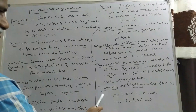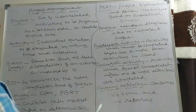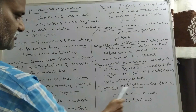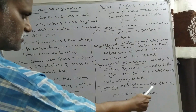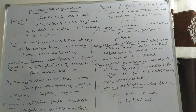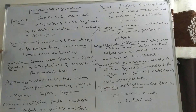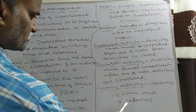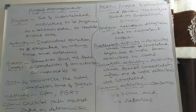There is another type used in network construction: the dummy activity. A dummy activity consumes no time and no resources. Each real activity requires some time and resources, but a dummy activity requires none — similar to slack and surplus variables in linear programming.